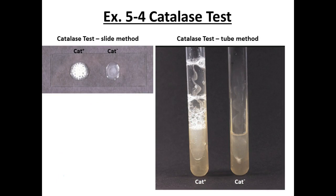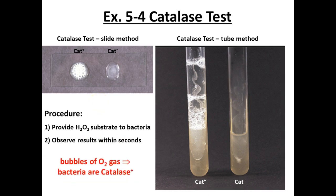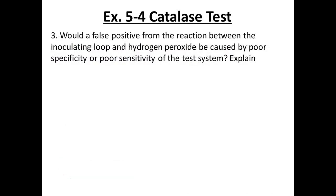We tested catalase two ways — on a glass slide and right on one of our slant tubes where the organisms were growing. We can see this reaction within seconds. If you see bubbles, catalase is present. Would a false positive from the reaction between the inoculating loop and hydrogen peroxide be caused by poor specificity or sensitivity? This is the one specificity issue — you don't know what's causing the reaction: is it the loop or your organism? This is why performing the procedure correctly is important.